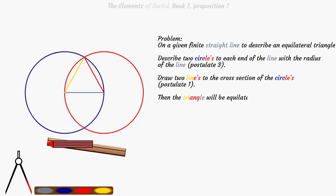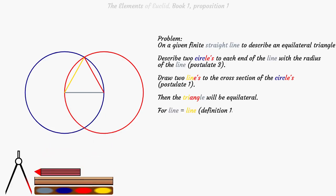Then the triangle will be equilateral. For the gray line is equal to the yellow line, definition 15, and the gray line is equal to the red line, definition 15. Therefore the yellow line is equal to the red line, axiom 1.